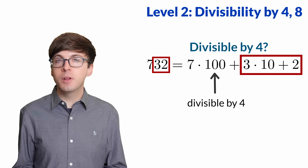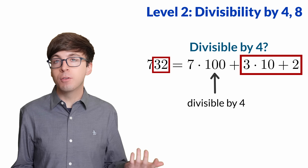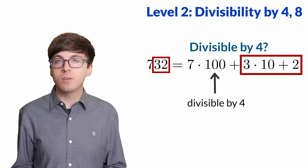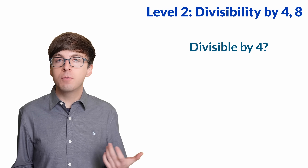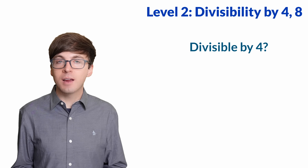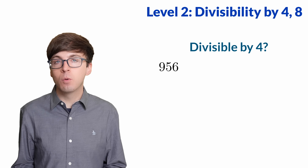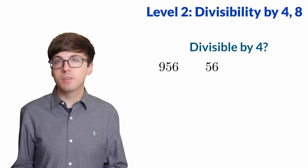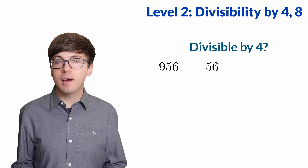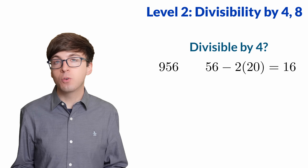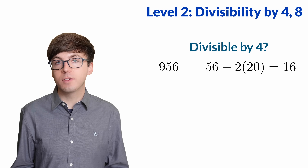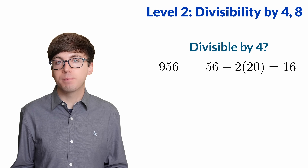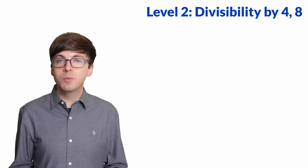We can enhance this trick by recognizing that 20 is divisible by 4. So although we have to include the 10's place, we can convert it to be either a 0 or a 1 by subtracting 20 as needed. For example, if we want to check if 956 is divisible by 4, we look at the last 2 digits, 56, and then convert the 5 to be a 1 by subtracting 20 twice. So then we're just checking that 16 is divisible by 4.